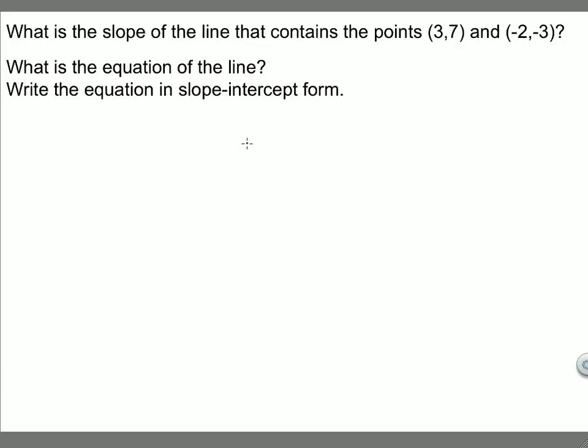This question asks us two things. The first is to find the slope of a line that contains these points, (3,7) and (-2,-3). And the second is to find the equation of the line.